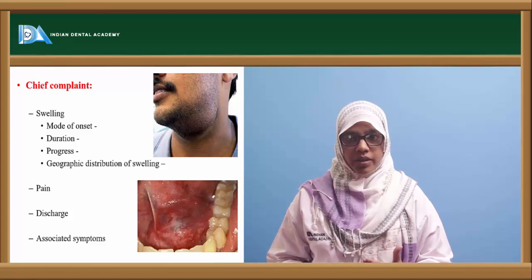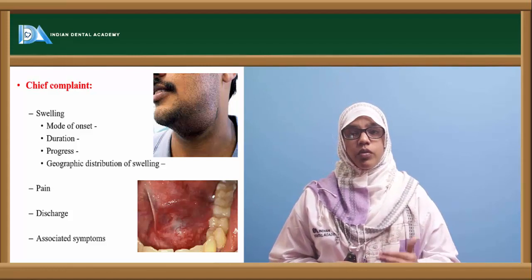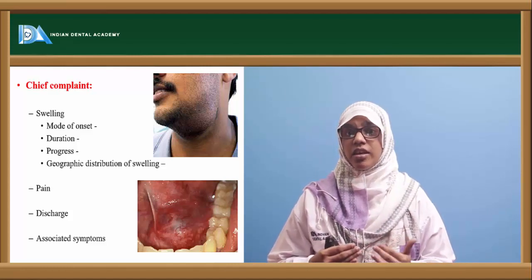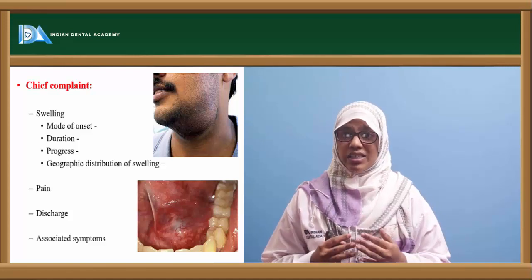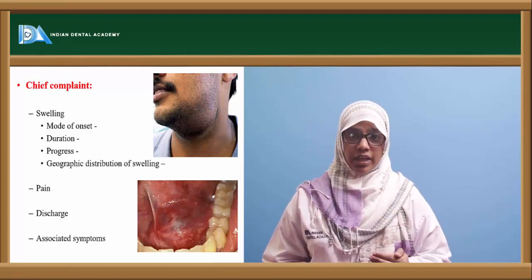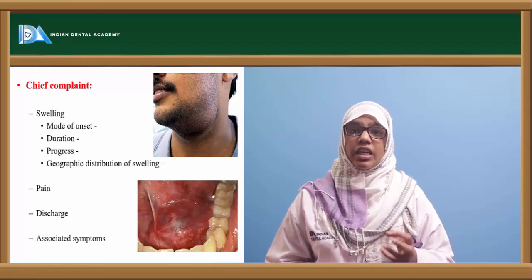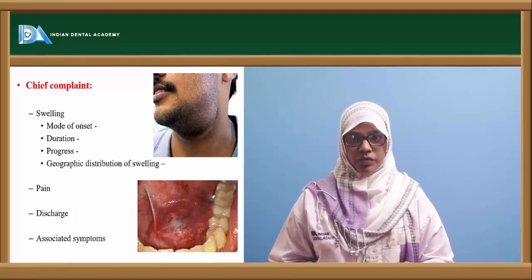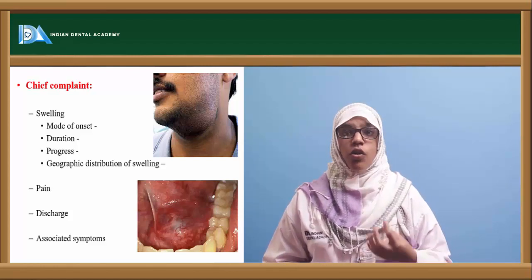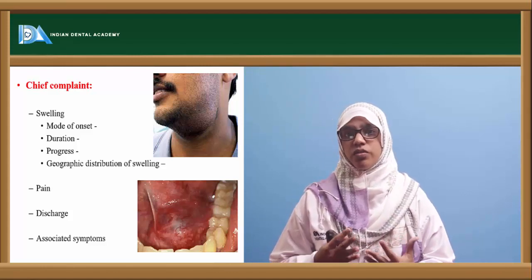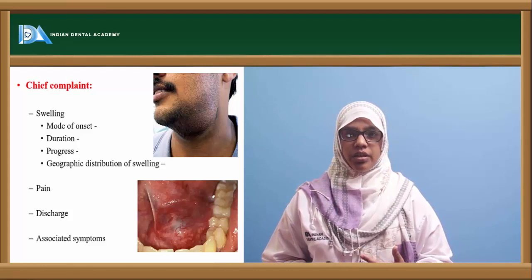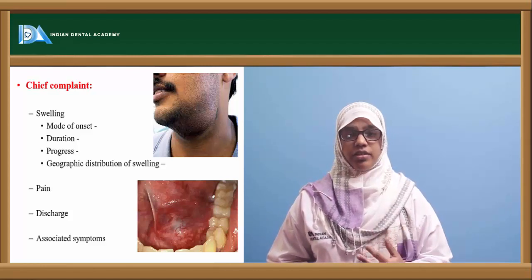Ask about the progress of the swelling and geographic distribution. In certain areas, children may be affected with bilateral submandibular swelling and fever — this could be mumps. Ask whether pain is present, as pain indicates infection. Pain is mainly due to the unyielding nature of the dense parotideomasseteric fascia. Ask about any discharge — external, internal, or from the duct — which is mainly because of an abscess or infection. Ask about associated symptoms like fever, malaise, vomiting, headache, and dehydration.